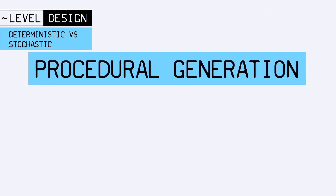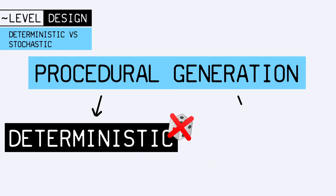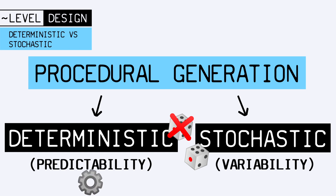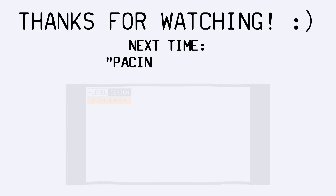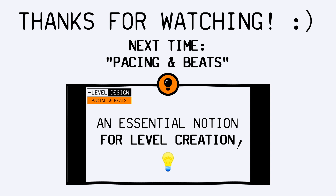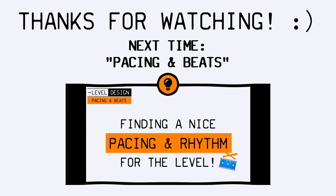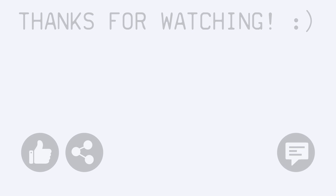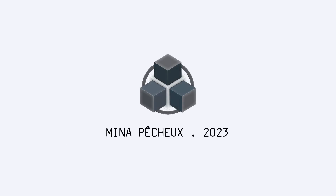To sum up, procedural generation can rely either on deterministic or stochastic processes, depending on the predictability or variability you need. And there are lots of algorithms in each category that you should definitely dive into if you're interested in this domain. I hope you enjoyed this quick tutorial about level design and procedural generation, and that you've learned a few things about deterministic and stochastic processes. If you did, feel free to like the video and subscribe to the channel. Don't hesitate to leave a comment with your own ideas for future level design tutorials. Thanks a lot for watching, and take care!